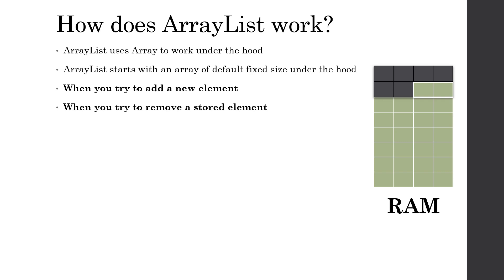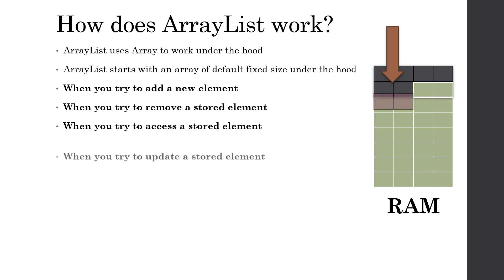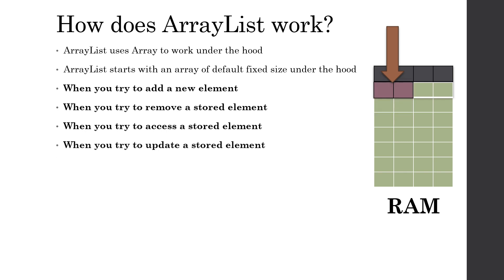When searching for an element in an ArrayList, we iterate through each element in the underlying array until we find it, otherwise we return null. For updating, we search for the element or its specific index, then override the value at that index.